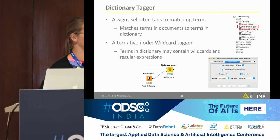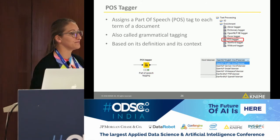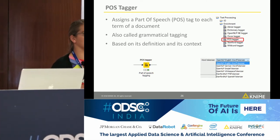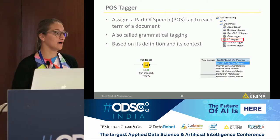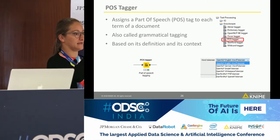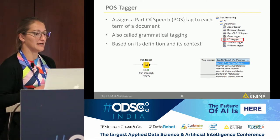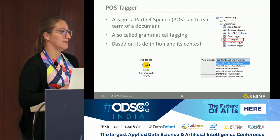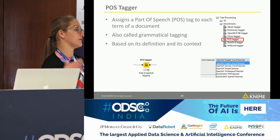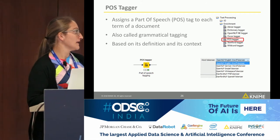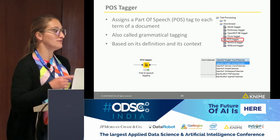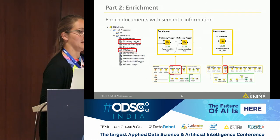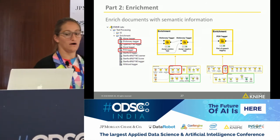Back to the taggers: we have the dictionary tagger, used in the lexicon-based approach, and the part-of-speech tagger. Part-of-speech tagging, or grammatical tagging, assigns tags like noun, verb, or adjective to each word based on the word's definition and context. For the machine learning approach, we tag words and then filter to keep only nouns, adjectives, and verbs. KNIME has a POS tagger and also the Stanford tagger with different algorithms for part-of-speech tagging.